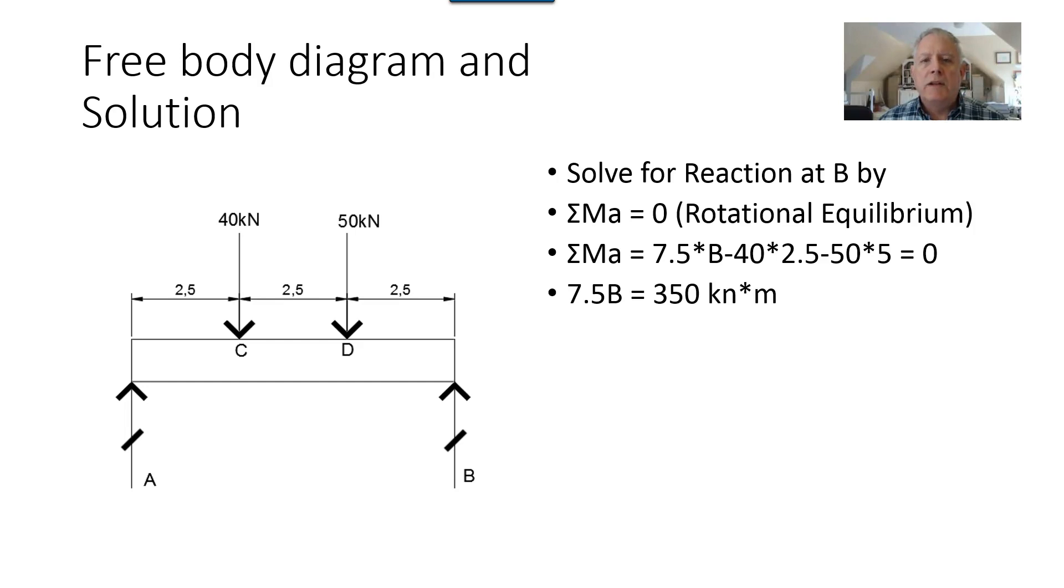Reorganizing the terms, 7.5 B equals 350 kilonewton meters. Dividing by 7.5 meters gives us the answer 46.7. I add an arrow up and I encourage you to do the same thing. Now this tells us that the assumed direction of our load was correct for our reaction.